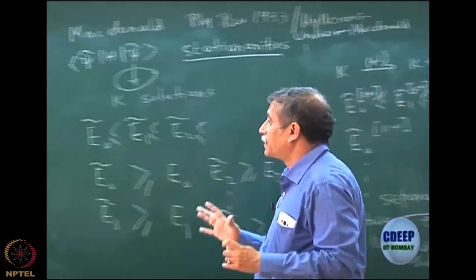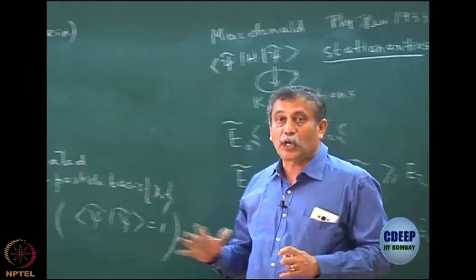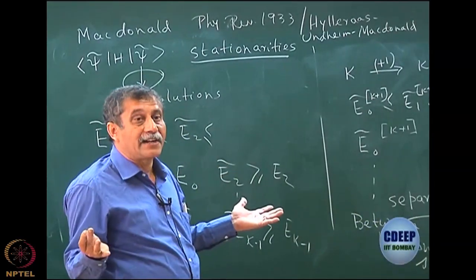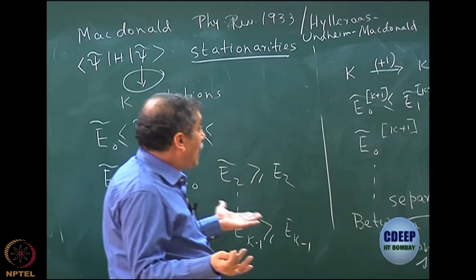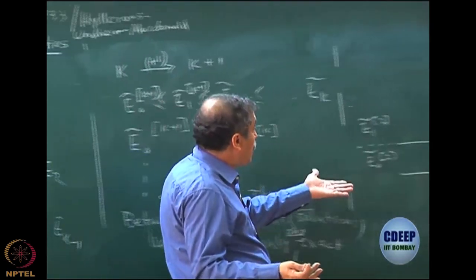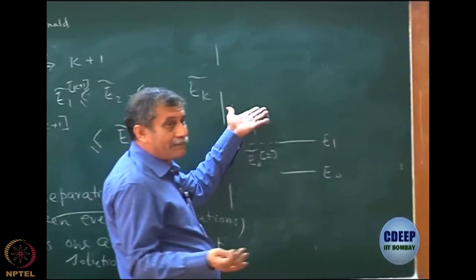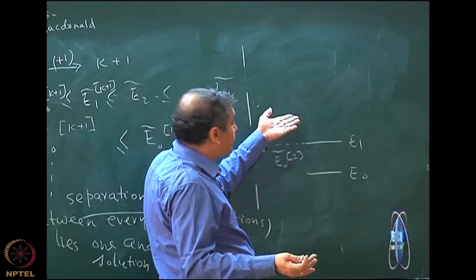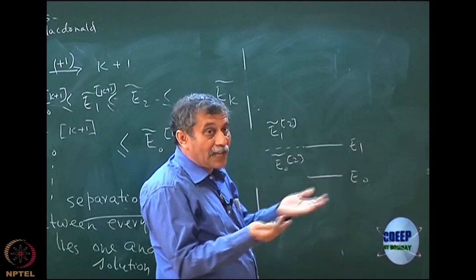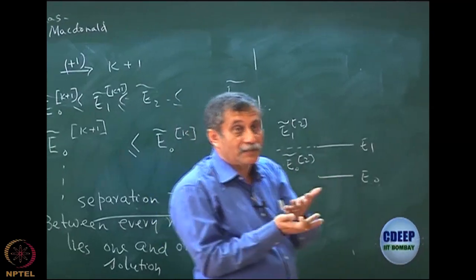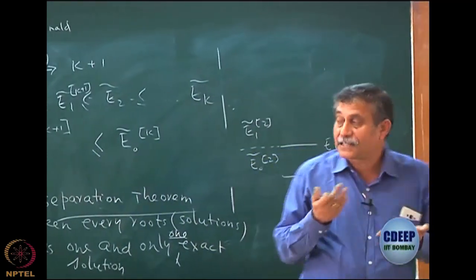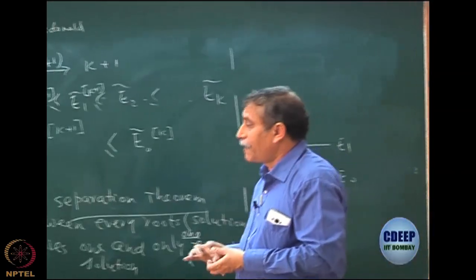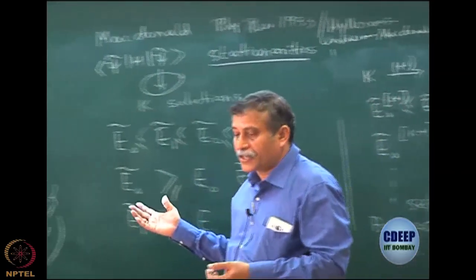That is essentially the content of the linear variation method. As you can see, it is a very powerful method. Because if I do an arbitrary Rayleigh variation I really do not know where I stand. But here I have a lot more idea of where I stand. I also know that this solution cannot exceed a certain bound — there has to be separation, interleaving of one exact root. That is why the linear variation is a very powerful method in quantum chemistry.